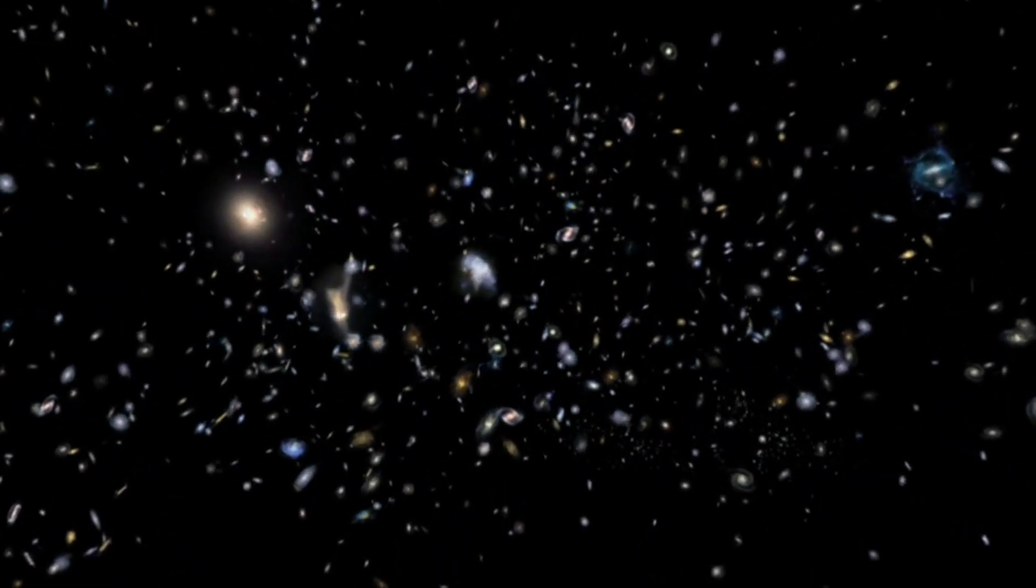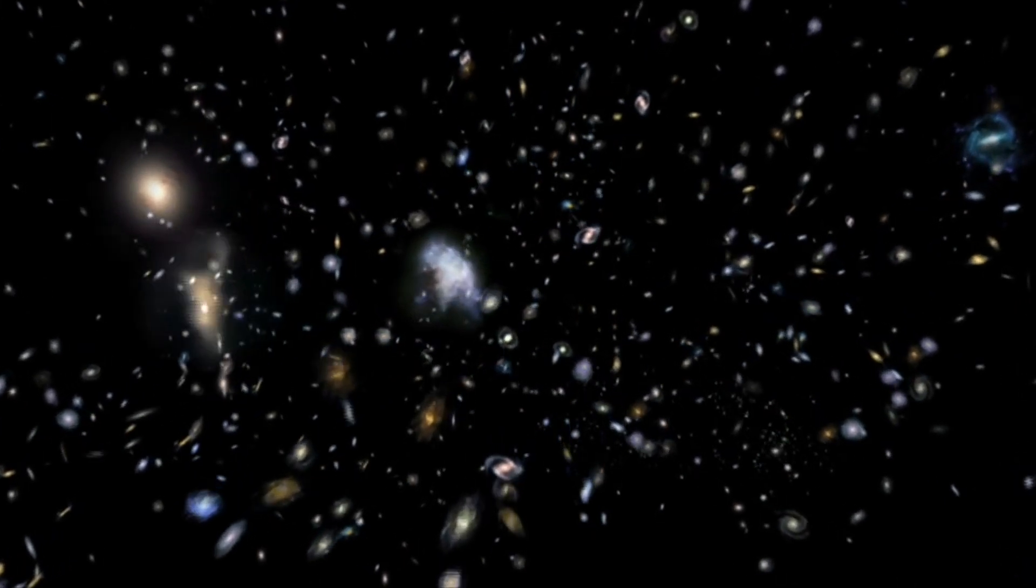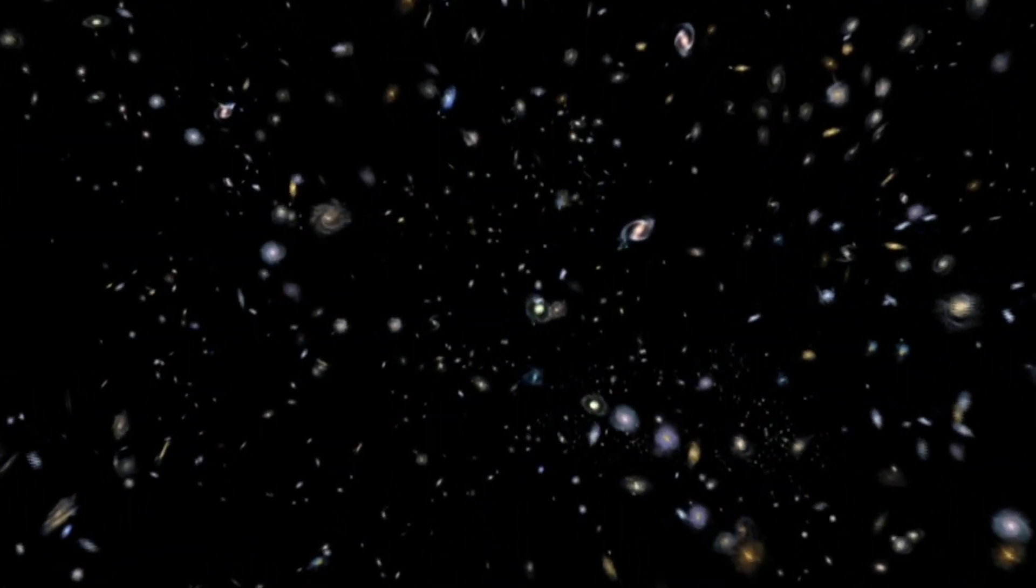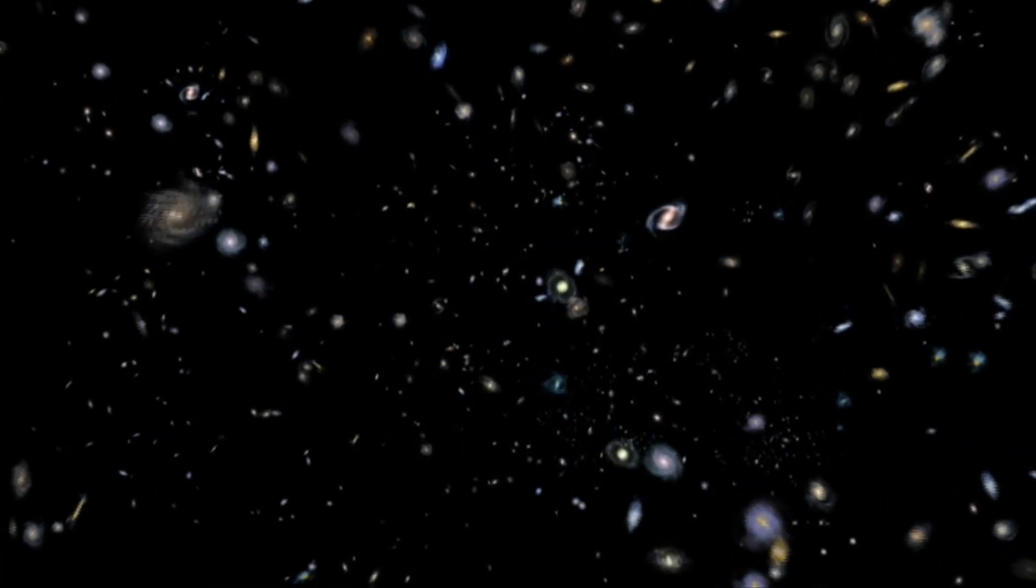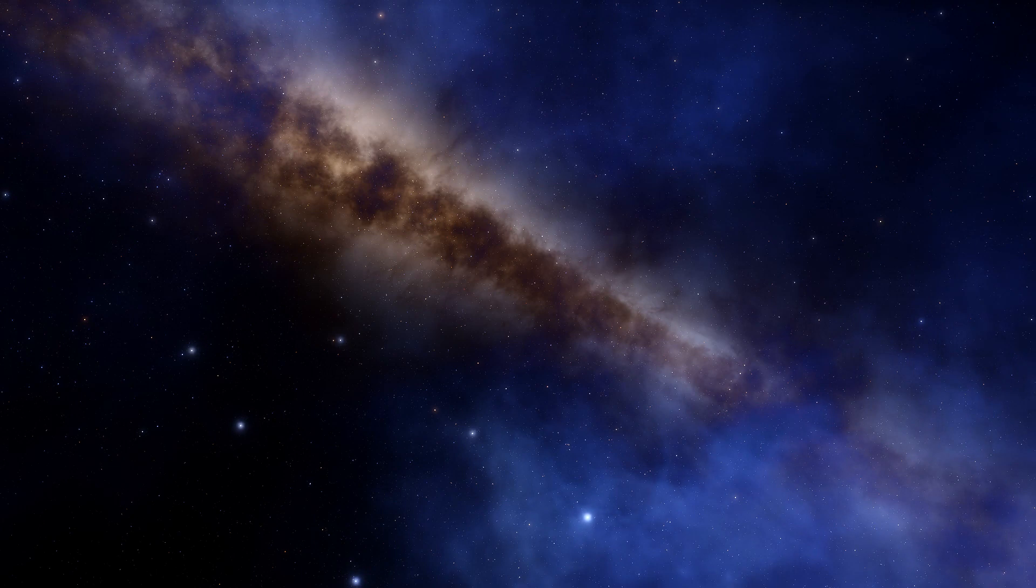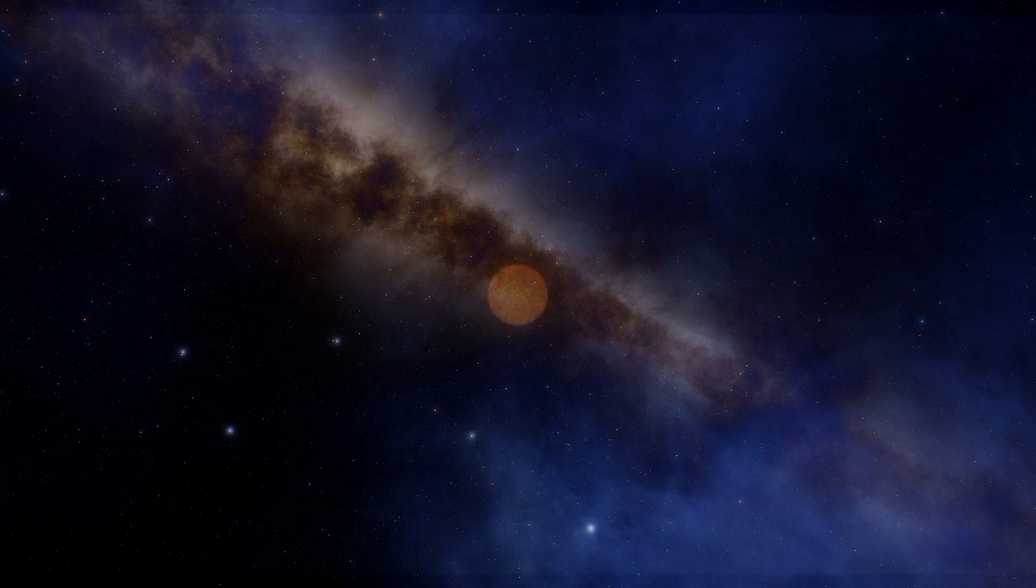According to Einstein's equations of general relativity, these wormholes should occur at the heart of a black hole where the density of matter in this region is too high. Einstein's theory shows that wormholes do not occupy space, they have no body, are infinitely dense and infinitely hot.